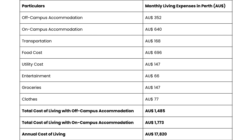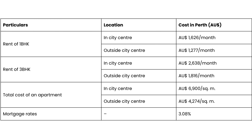It definitely depends on the location — how far it is from your university, how far from the city. In Perth, it's $400 to $500 per week for a one-bedroom apartment, and for houses it's $600 to $800 per week.